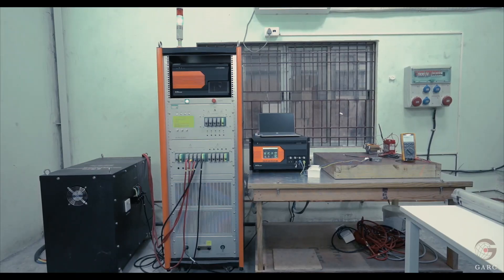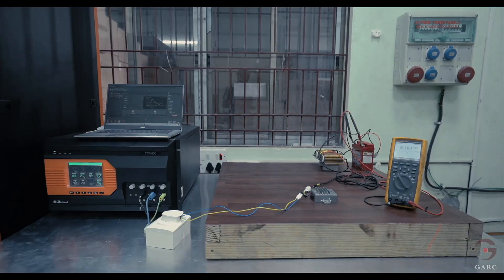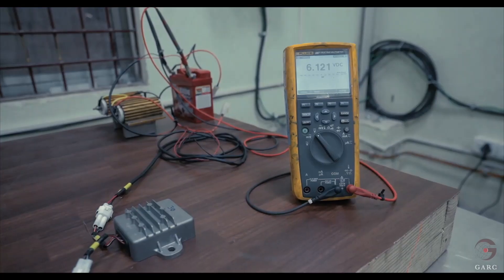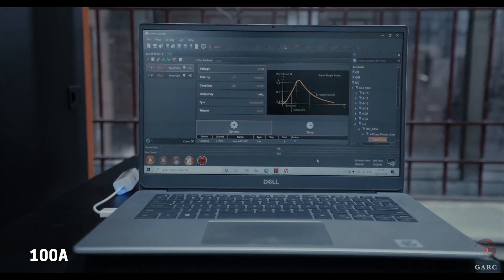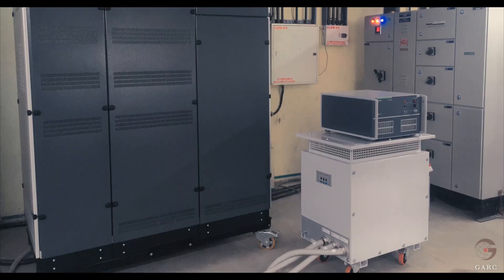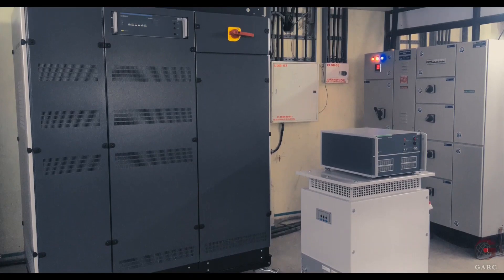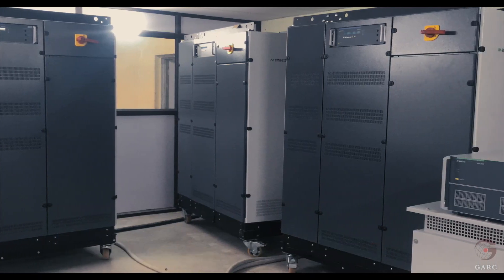This lab also has electrical fast transient test setup which includes an EFT generator with single phase CDN with 16 ampere and three phase CDN with 100 ampere current rating. The EMC lab also has a facility to measure harmonic immunity of supply voltage and charges.